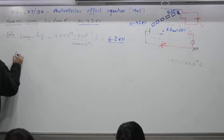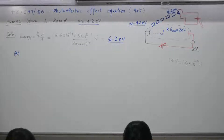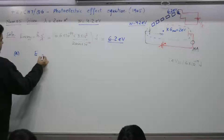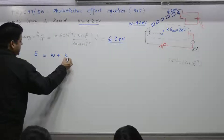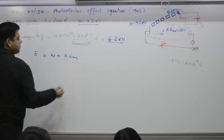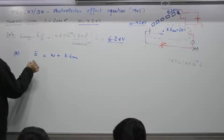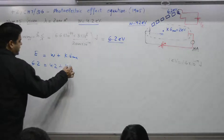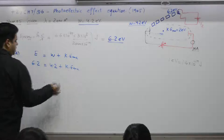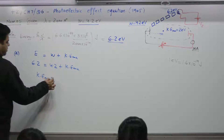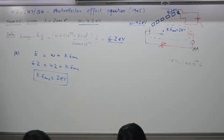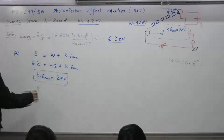So the topper — the fastest electron — will come out with maximum kinetic energy. Using the equation: energy of packet = work function + KE_max, we get 6.2 = 4.2 + KE_max. So KE_max = 2 electron volts. Part A: the fastest electron comes out with 2 eV of kinetic energy.